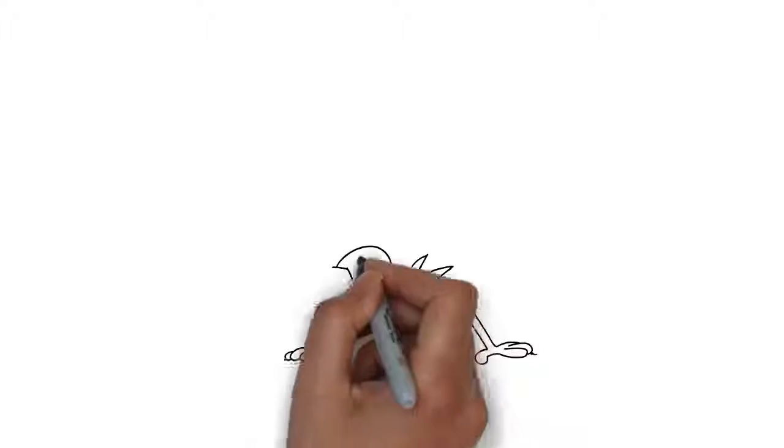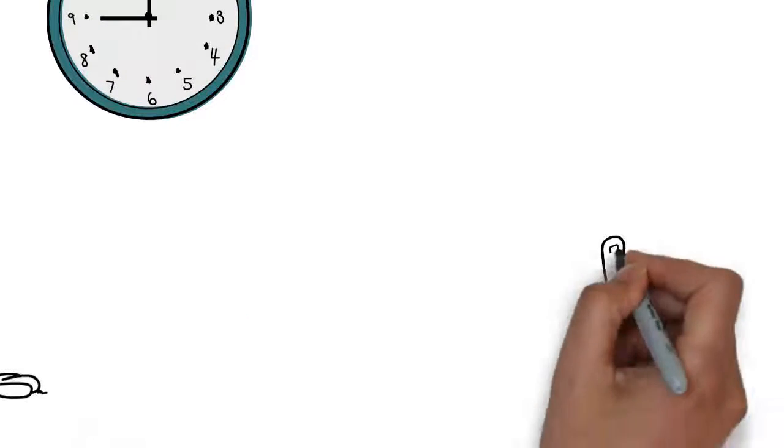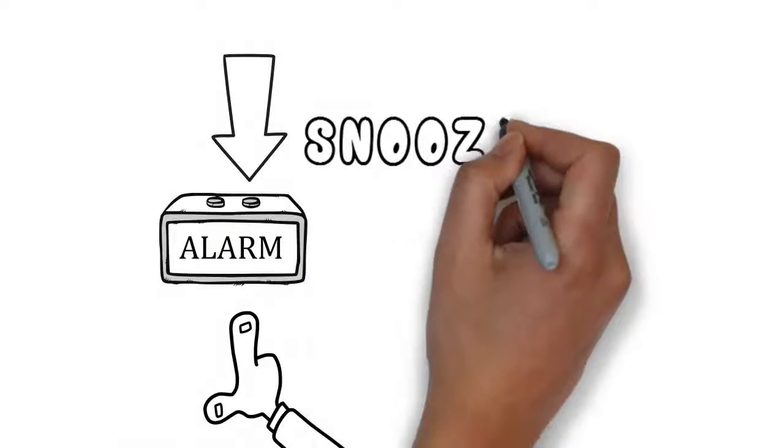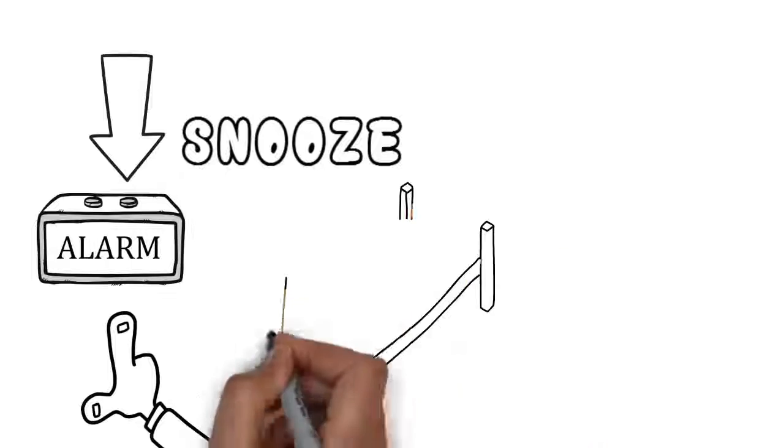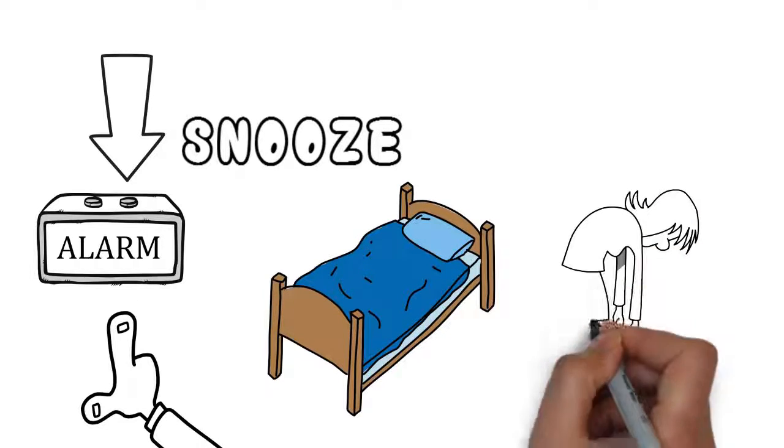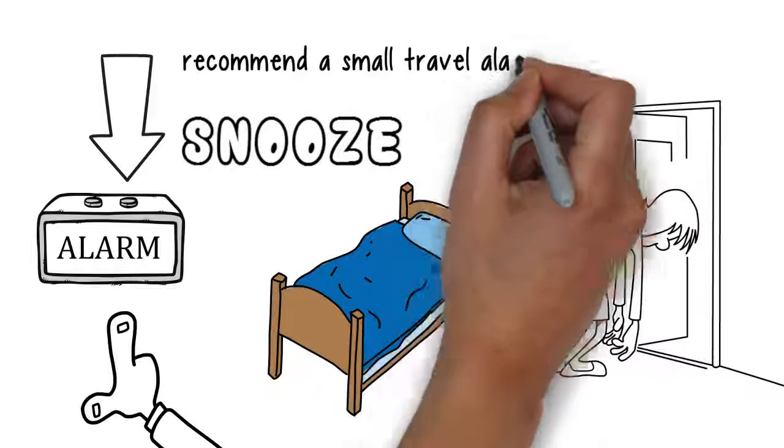For example, if you're really struggling to wake up to get to that 9am lecture, a tactic that used to save me was to set two alarms. It's all too easy to hit the snooze button when you only have one, and I used to put a second alarm on the opposite side of my room so I had to physically get out of bed to switch it off. I recommend a small travel alarm to do the job.